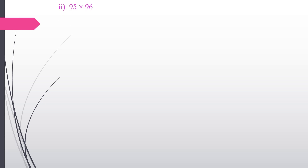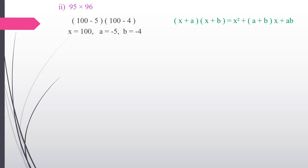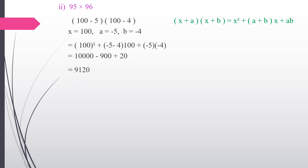Second subdivision: 95 × 96. We split this as (100 − 5)(100 − 4) and use the identity (x + a)(x + b) = x² + (a + b)x + ab, where x = 100, a = −5, b = −4. Applying: 100² + (−5 − 4) × 100 + (−5)(−4) = 10,000 − 900 + 20. The answer is 9,120.